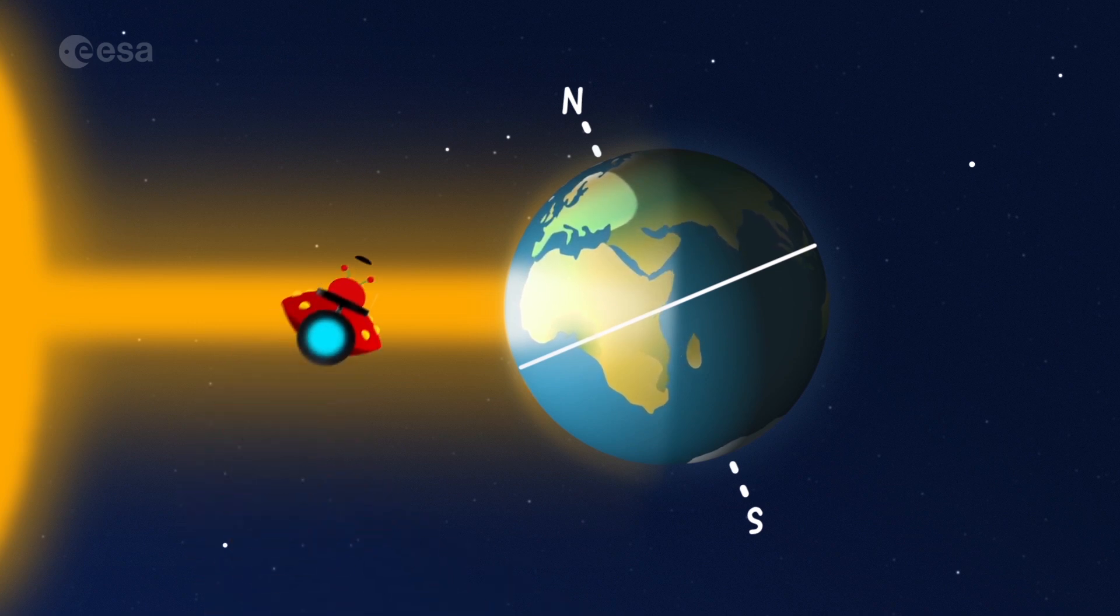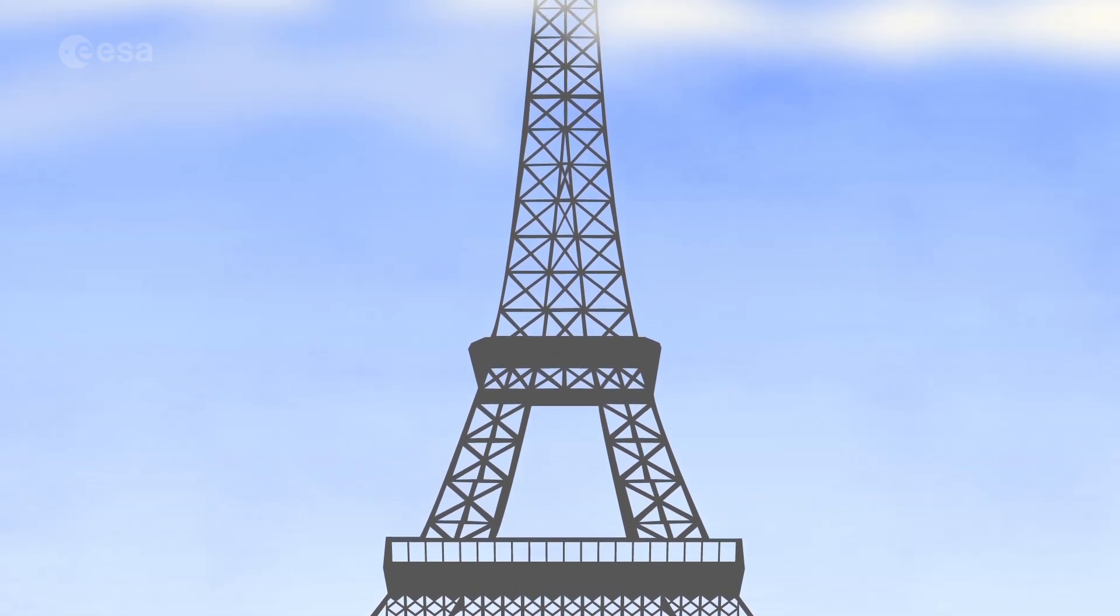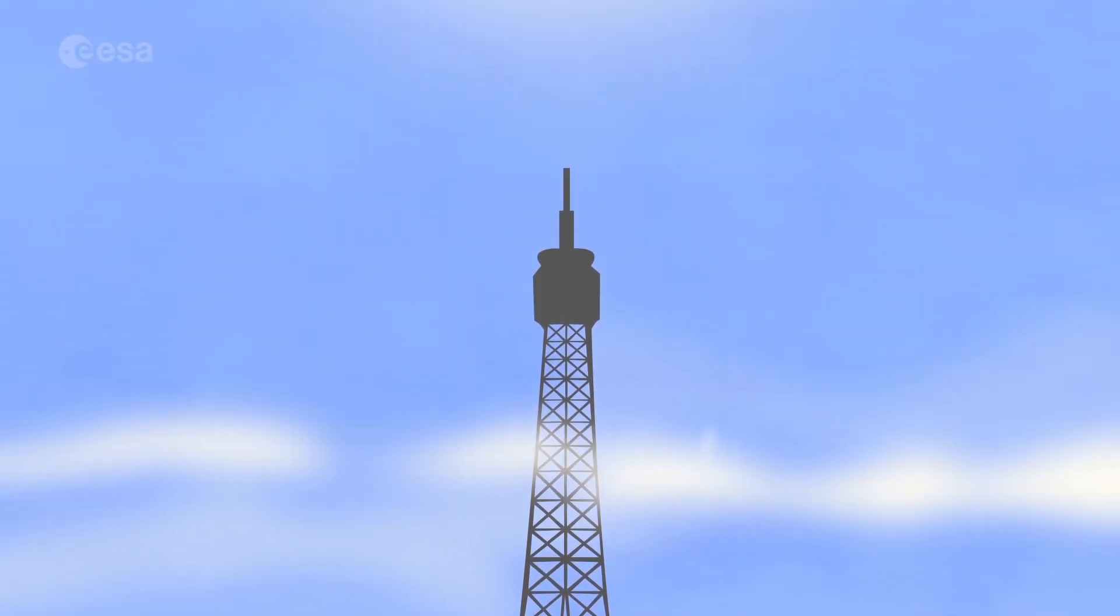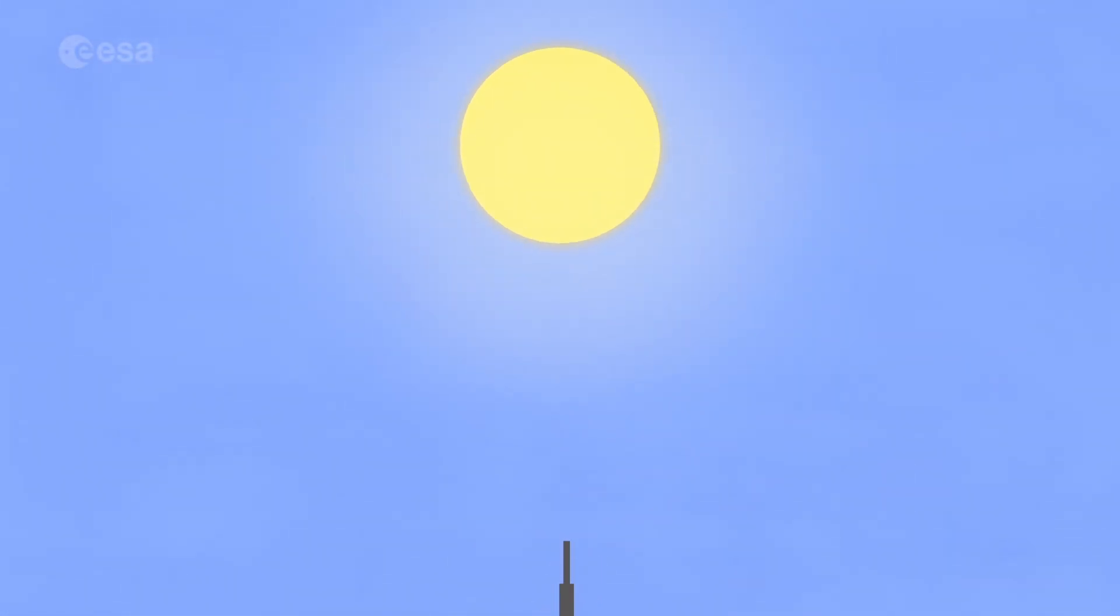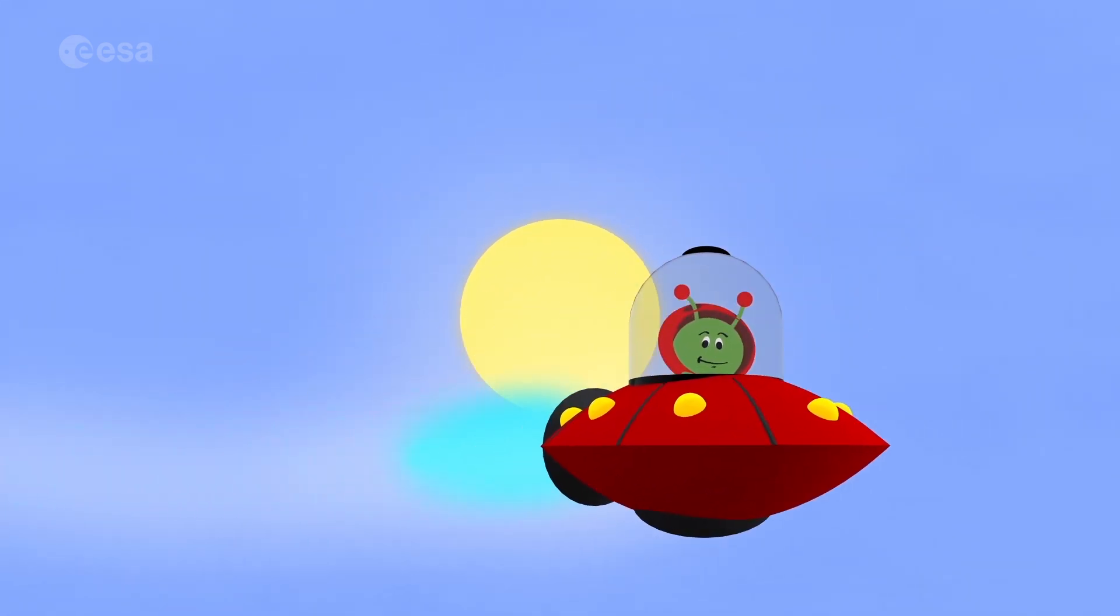For example, in Europe, when the northern hemisphere is tilted towards the sun, it's summer there. The sun appears to be very high in the sky. Days are longer and warmer. Hooray!